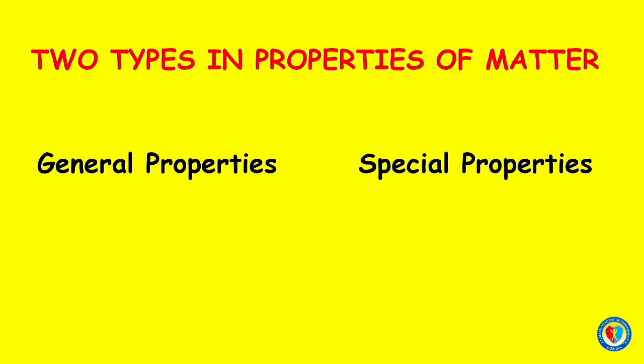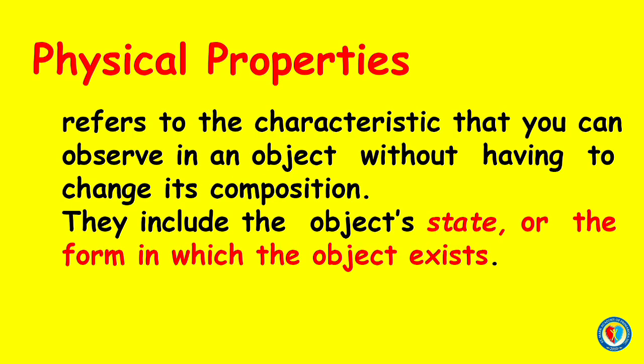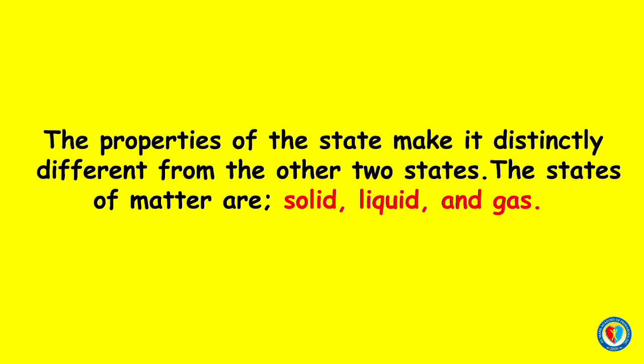There are two types of properties of matter: the general properties and the special properties. General properties are divided into two classes — physical and chemical. Physical properties refer to the characteristics that you can observe in an object without having to change its composition. They include the object's state, or the form in which the object exists. The states of matter are solid, liquid, and gas.